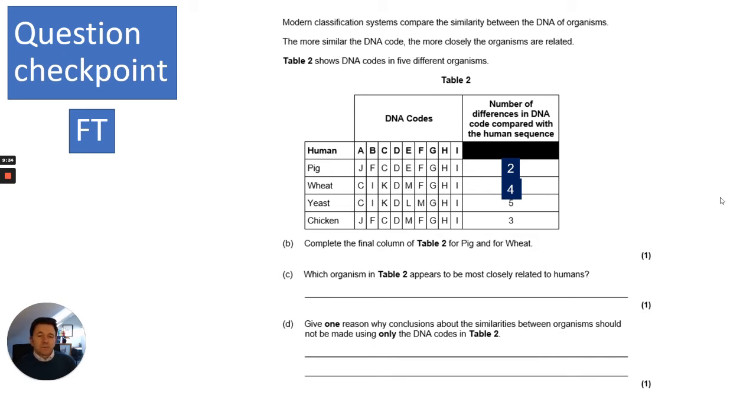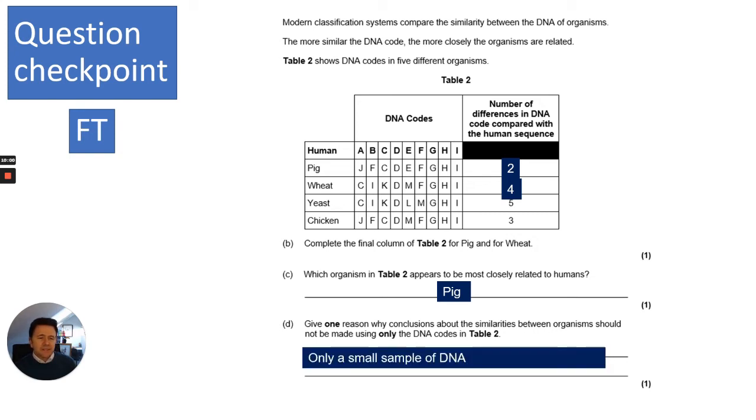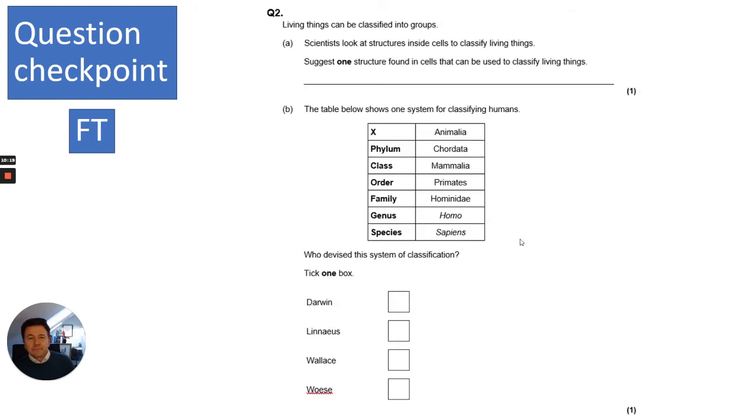Then it says which organism in table two appears to be most closely related to humans. The one that's most closely related will have the fewest differences in DNA, so in that case it's going to be the pig. It then says give one reason why conclusions about the similarities between organisms should not be made using only the DNA codes. You need to think about the fact that only a small sample of DNA is used. There may be differences if you look at the rest of the DNA.